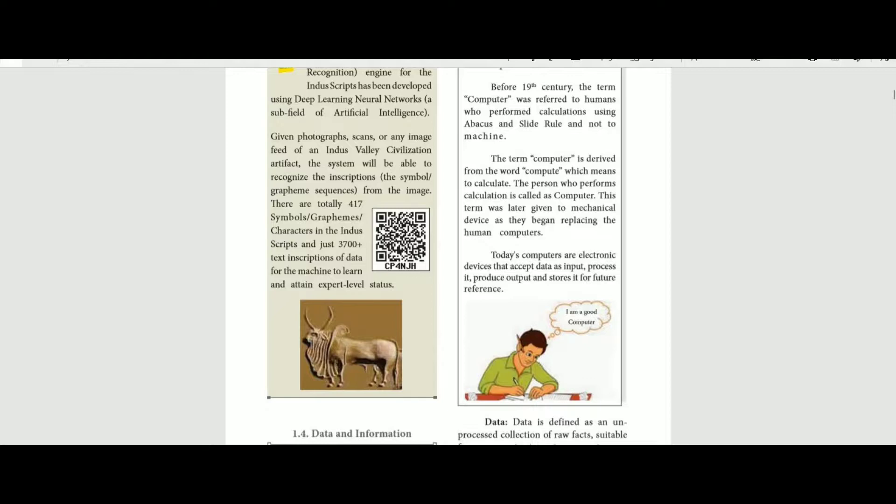The first thing about data and information is that the first human is a computer. How do you compare data and information about humans?